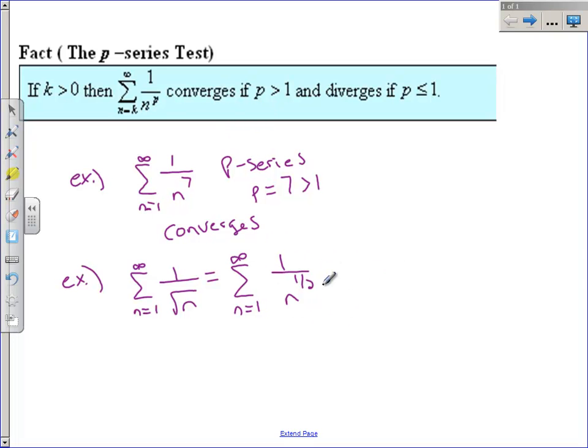This is a P-Series. It's 1 over n to a power. This is a P-Series with P equal to 1 half. 1 half is less than 1. Therefore, this series, by our fact, diverges.